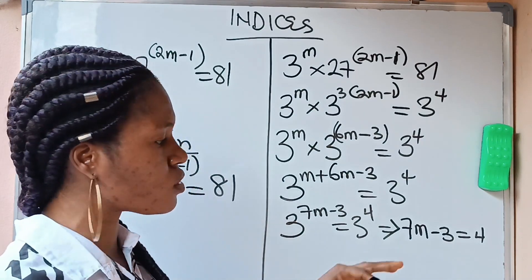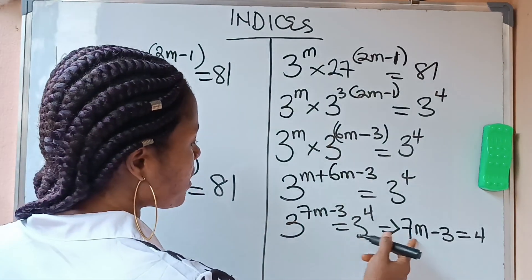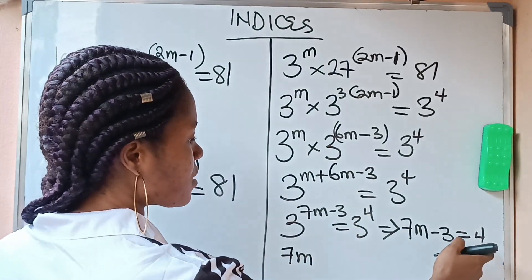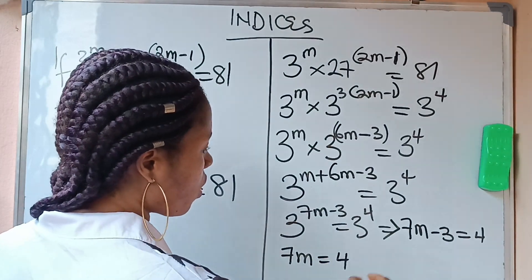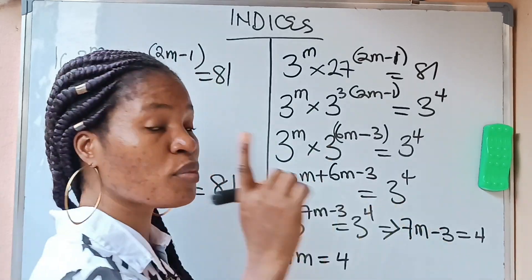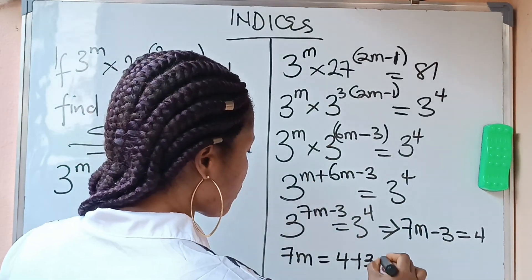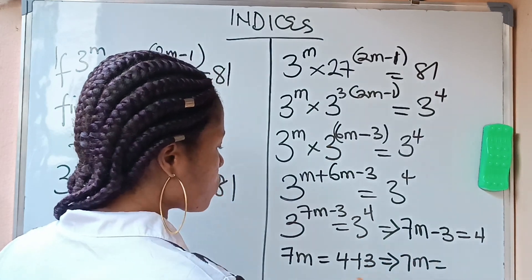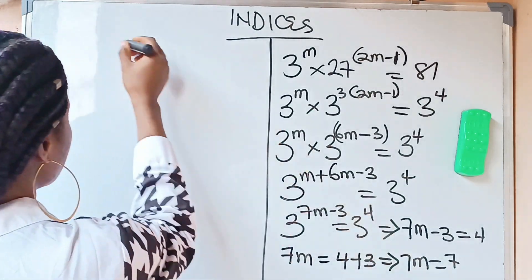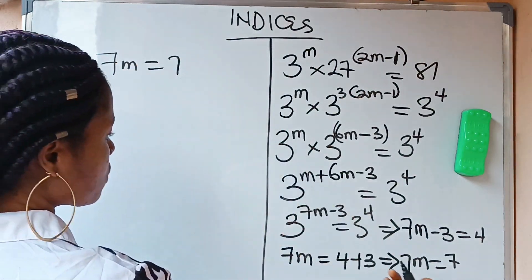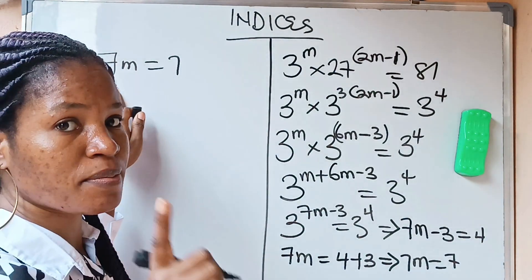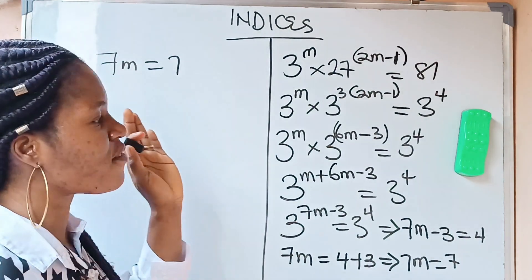Now we solve for m. We want 7m on its own, so we move the minus 3 across the equation — it becomes plus 3. So 7m equals 4 plus 3, which is 7. Therefore, 7m equals 7. Dividing both sides by 7 gives us m equals 1.